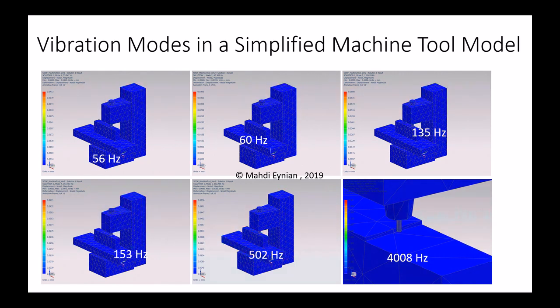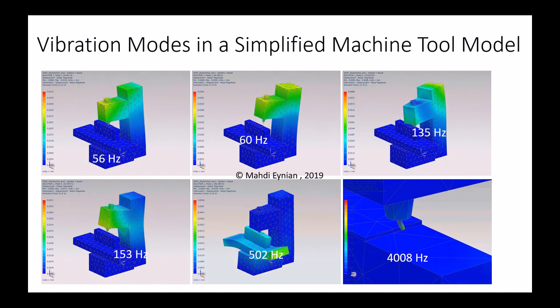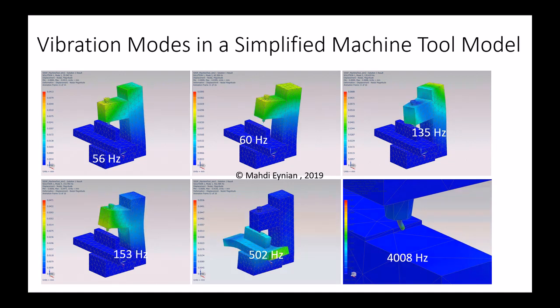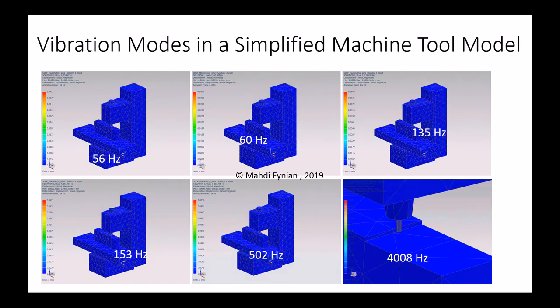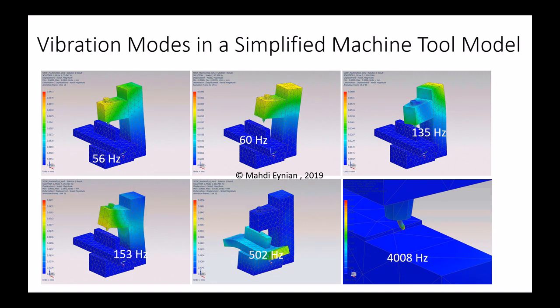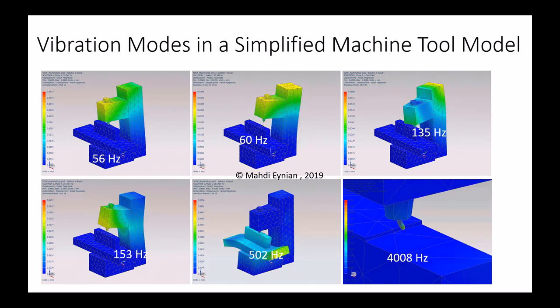It has a C-type column that brings the tool next to the workpiece. I made a simple boundary condition by fixing the bottom of the machine tool to the floor. It's obviously an approximation.